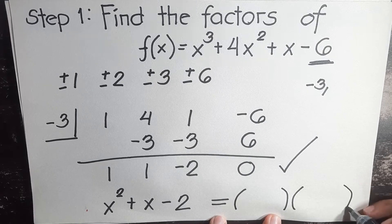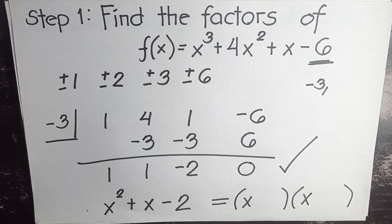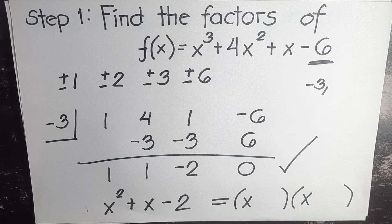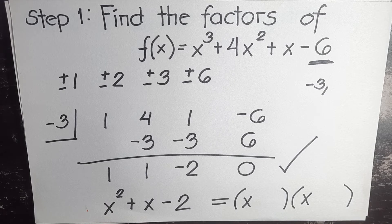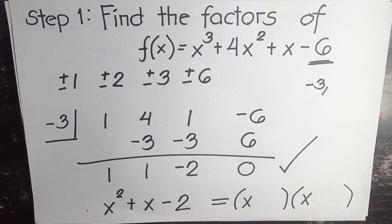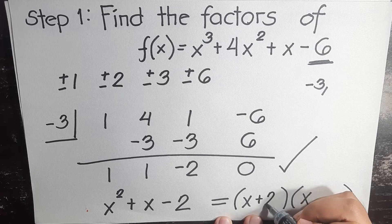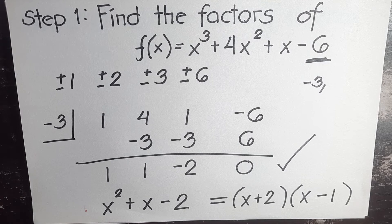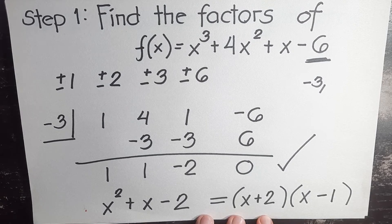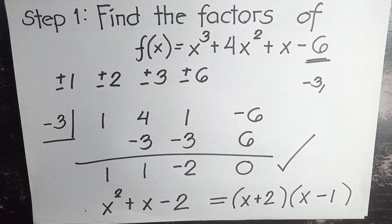This is already in second degree form, which means we can already use factoring by inspection. What are the two factors that when you multiply will give us x² + x - 2? Going back to factoring polynomials, what we have here is (x + 2) and (x - 1). So there you have it. We already have our three factors. We can now proceed to the next step.